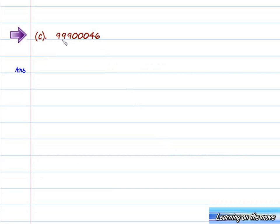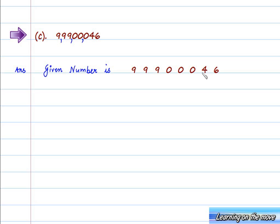In Part C, the given number is 99900046. Let us put the commas according to the Indian system. The first comma is after three digits, and subsequent commas are after every two digits from the right. The place values are: units, tens, hundreds, thousands, ten thousand, lakh, ten lakh, and crore. We can read this as 9 crore, 99,46,000.